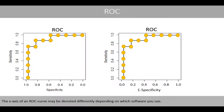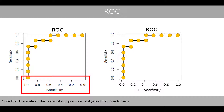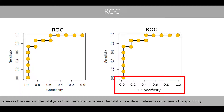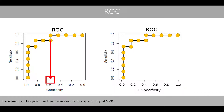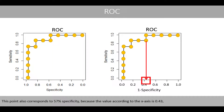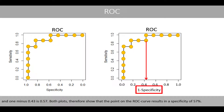The x-axis of an ROC curve may be denoted differently depending on which software you use. Note that the scale of the x-axis of our previous plot goes from 1 to 0, whereas the x-axis in this plot goes from 0 to 1, where the x-label is instead defined as 1 minus the specificity. For example, a point on the curve with a specificity of 57% corresponds to an x-axis value of 0.43, since 1 minus 0.43 is 0.57.